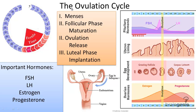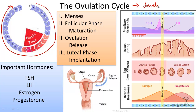The ovulation cycle, sometimes referred to as the menstrual cycle, is a 28-day cycle of hormones, uterine and egg development, whose purpose is to ready the body for a developing embryo. There are four important steps involved in the ovulation cycle, and four very important hormones. This is sometimes referred to in two major phases, the follicular phase and the luteal phase, but we're going to talk about it in four steps.